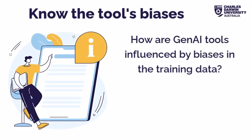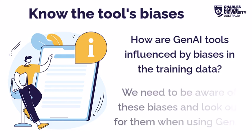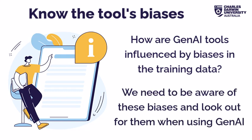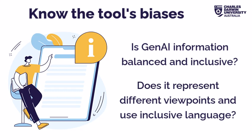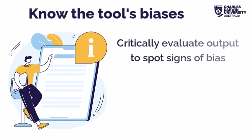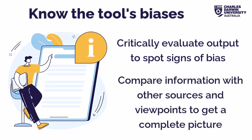When we critically evaluate Gen AI, we need to consider how these tools are influenced by biases that exist in the training data. It's important to be aware of these biases and actively look out for them when evaluating Gen AI output. When you use Gen AI, it's crucial to assess whether the information it provides is balanced and inclusive — considering whether it represents different viewpoints fairly and uses language that is inclusive of all individuals. You can compare the information with other sources and perspectives to get a more complete picture of the topic.